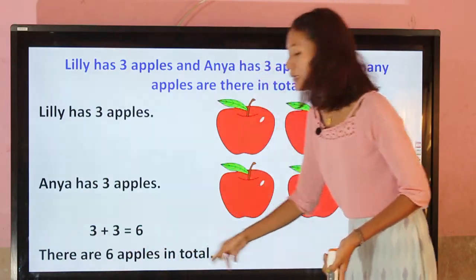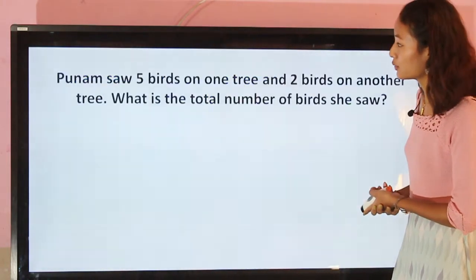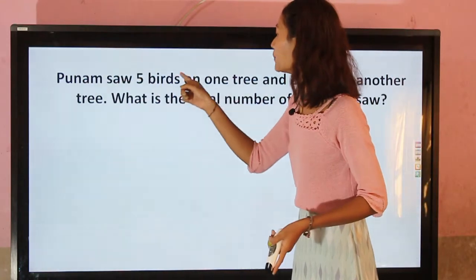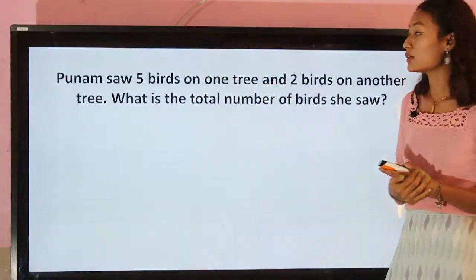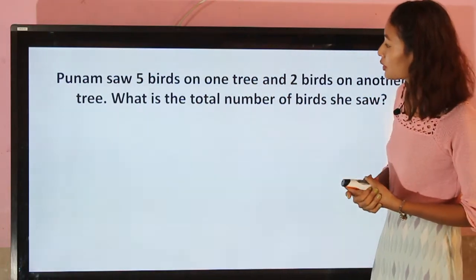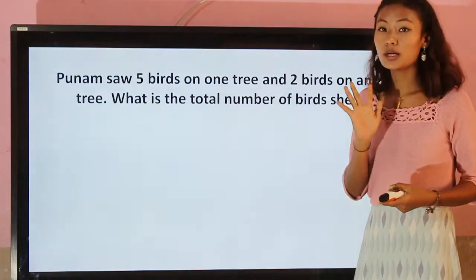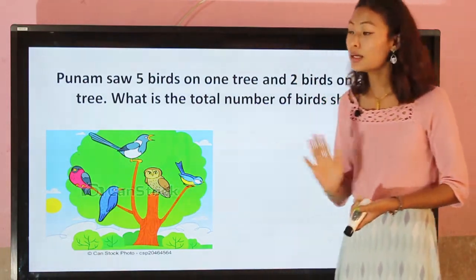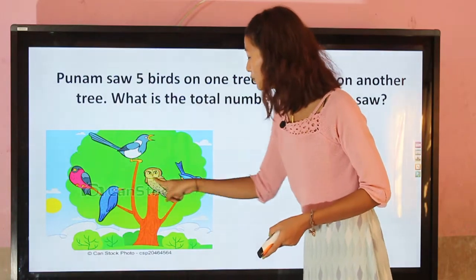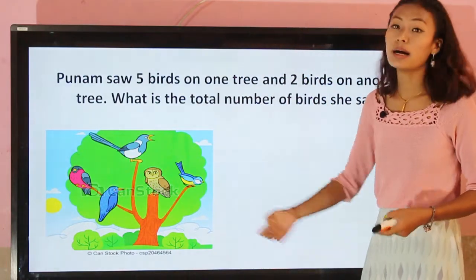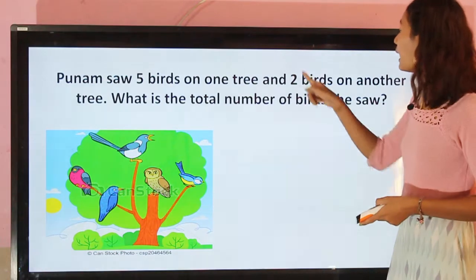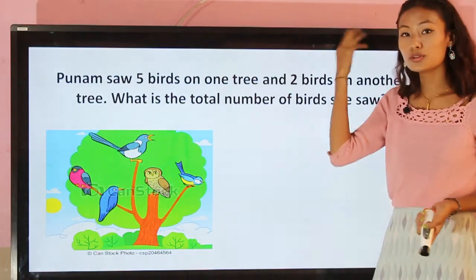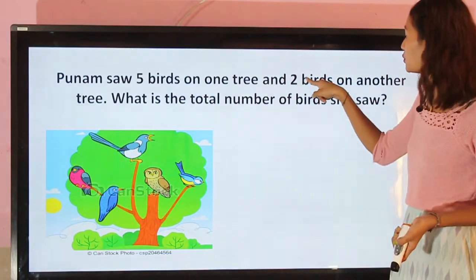Let's do more exercise. Poonam saw five birds on one tree — one, two, three, four, five. And two birds on another tree — one, two.